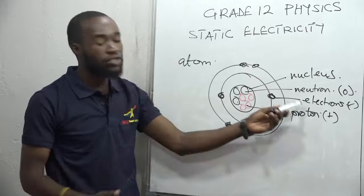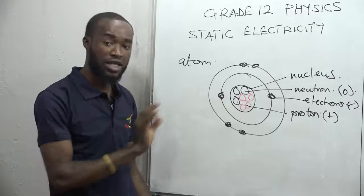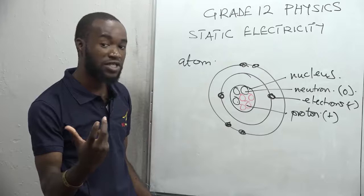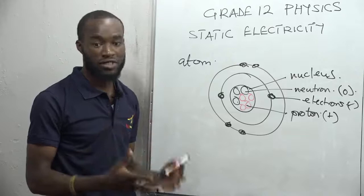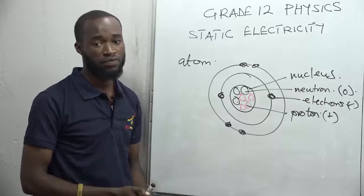When you look at the electrons, which are negatively charged, and the protons, which are positively charged, in an electrically neutral atom the number of electrons is equal to the number of protons. This means we have the same number of positive charges and negative charges. That situation is called an electrically neutral atom, meaning the net charge — the total charge of the atom — is zero.